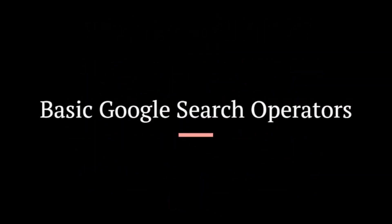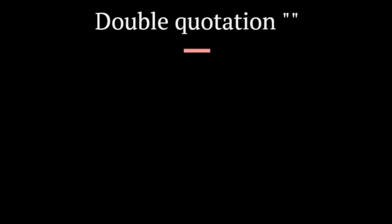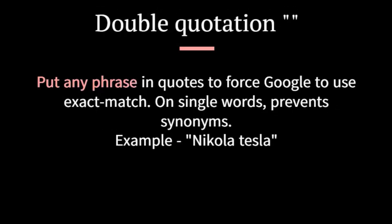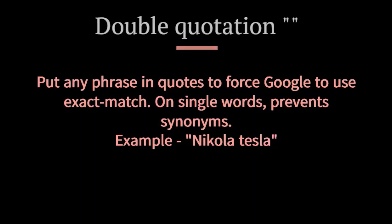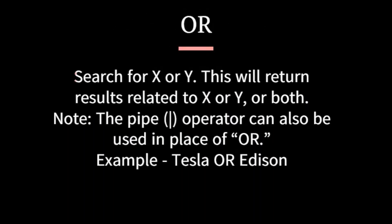Now, let's understand basic Google search operators. Put any phrase in quotes to force Google to use exact match on single words — this prevents synonyms. Example: "Nikola Tesla". Search for X or Y — this will return results related to X or Y, or both. The pipe operator can also be used in place of OR. Example: Tesla or Edison.